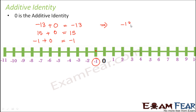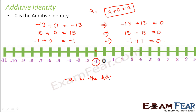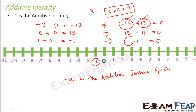What we indirectly mean is: minus 13 plus 13 equals 0. Similarly, plus 15 minus 15 equals 0, and minus 1 plus 1 equals 0. So, for any integer a, a plus 0 is always equal to a — that is why 0 is called the additive identity. And for any integer a, minus a is the additive inverse of a, because when minus a is added to a the result is 0. The additive inverse of minus 13 is plus 13, of plus 13 is minus 13, and so on.